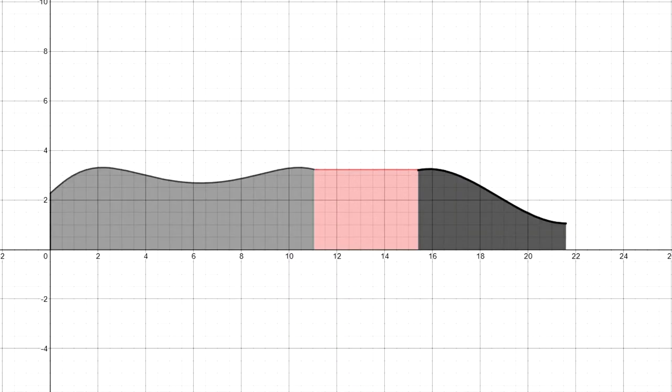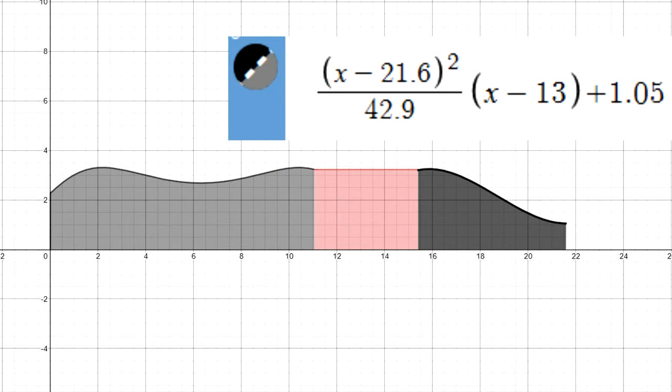Next, for the tapering of the bottle, we used a polynomial function, because the shape of the bottle goes up and then goes gradually down. So, the parameters that we used altered the point in which the graph touched the x-axis, its amplitude, and its vertical shifting.